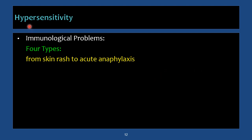Do not confuse supersensitivity with hypersensitivity. Supersensitivity is increased receptor responsiveness. Hypersensitivity is an allergic reaction — an immunological problem. There are four types (Type 1 to Type 4), ranging from simple skin rashes to severe acute anaphylactic shock.